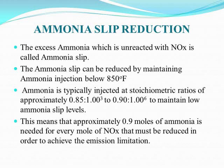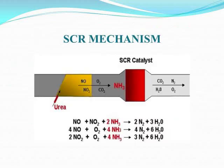Ammonia slip occurs when the proper quantity of ammonia is not injected into the exhaust stream. It can also lead to the re-formation of oxides of nitrogen when the temperature exceeds 850°F (approximately 460°C), as excess ammonia reacts with oxygen above that temperature to form NOx again. Ammonia slip also leads to the formation of ammonium sulfate and ammonium bisulfate.